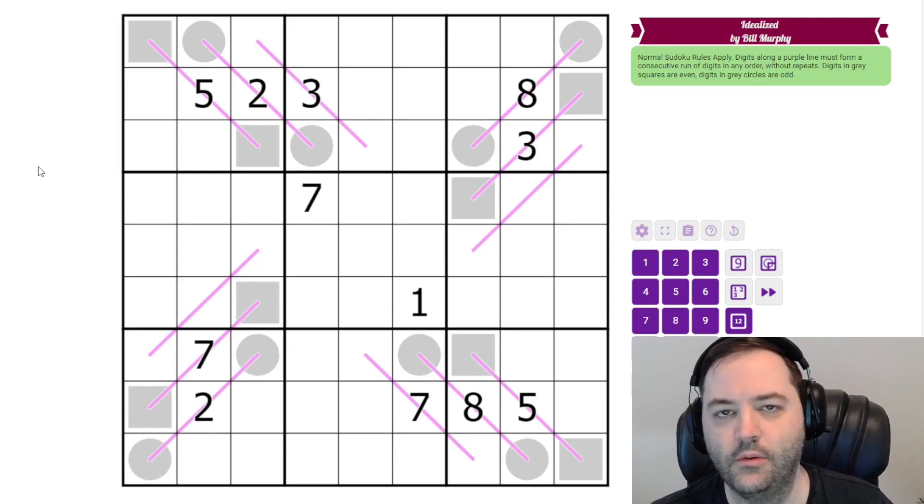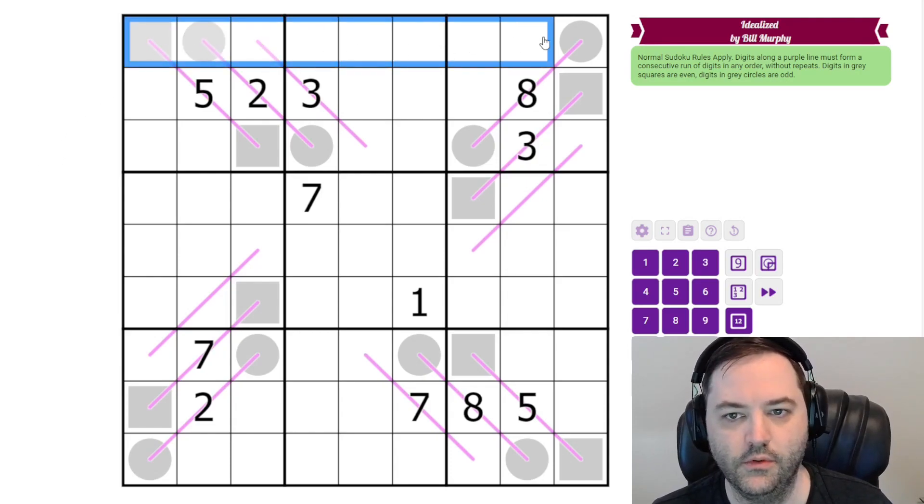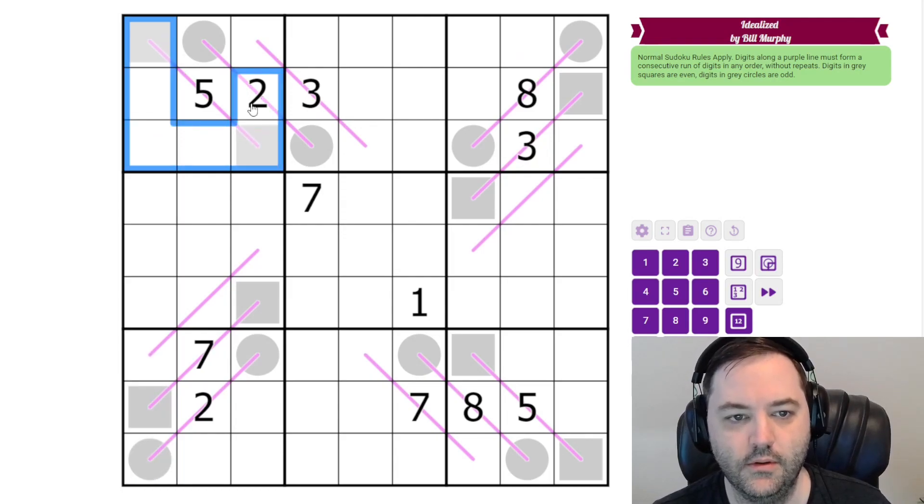Hi everyone, this is a walkthrough for the February 18th puzzle, idealized by Bill Murphy. And this is a Rinban and odd and even Sudoku. Normal Sudoku rules apply, one to nine in each row, column, and three by two box.